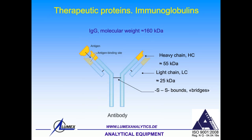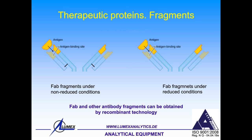What are monoclonal antibodies? They are high molecular mass proteins of about 160 kilodaltons consisting of two heavy chains — called HC — of about 55 kilodaltons each, and two light chains — called LC — of about 22-25 kilodaltons. All four chains are connected with each other by so-called SS bonds or disulfide bridges. Besides the whole antibody, there are also FAB fragments where we have only short parts of the chains — a heavy chain and light chains — and these FAB fragments can still bind with a certain antigen. Both whole IgG and FAB fragments can be obtained by recombinant technology.